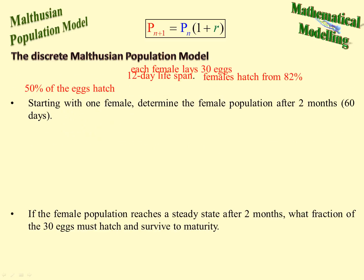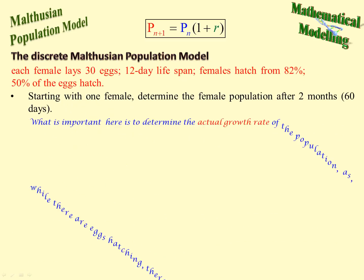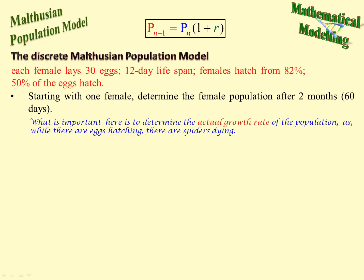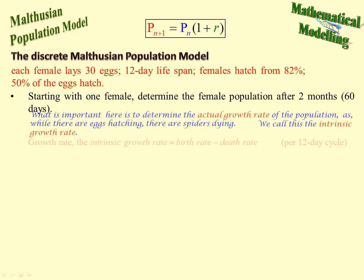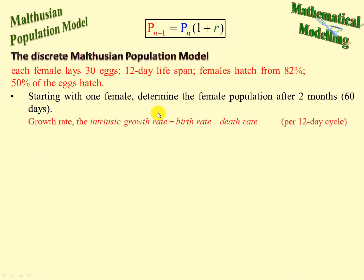Let's look at the first question. The important thing here is to determine the actual growth rate of the population, since while there are eggs hatching, there are spiders dying. That's the intrinsic growth rate: birth rate minus death rate, per 12-day life cycle, and it's per spider.